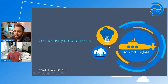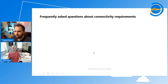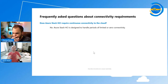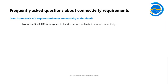So now obviously there's a question about connectivity. What are the requirements? I prepared this in a frequently-asked-questions fashion. The first question we always get is: does Azure Stack HCI require continuous connectivity to the cloud? No — we can handle periods of limited or even zero connectivity. And if the connection goes down, will my VMs stop running? No — everything will continue to run normally. Even your local tools like SCVMM, Windows Admin Center, and PowerShell are all local and don't need connectivity.